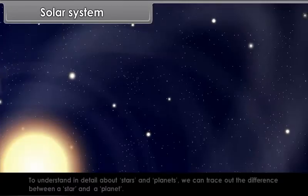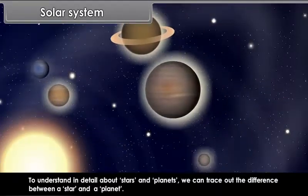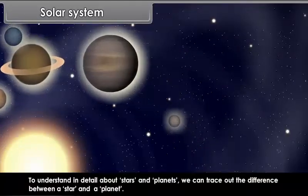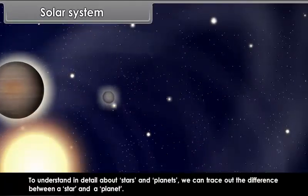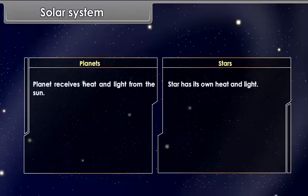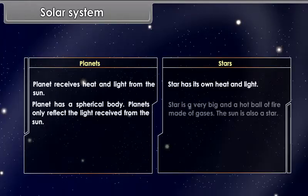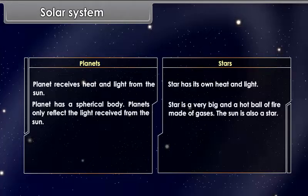To understand in detail about stars and planets, we can trace out the difference between a star and a planet. Planet receives heat and light from the sun. Star has its own heat and light. Planet has a spherical body. Planets only reflect the light received from the sun. Star is a very big and hot ball of fire made of gases.